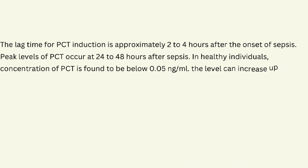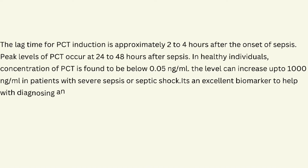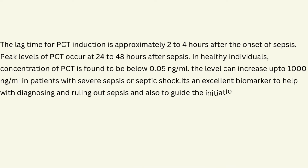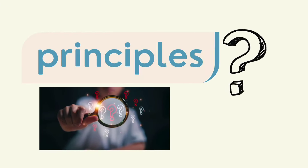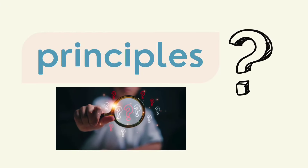In healthy individuals, concentration of PCT is found to be below 0.5 ng/mL. The level can increase up to 1,000 ng/mL in patients with severe sepsis or septic shock. It's an excellent biomarker to help with diagnosing and ruling out sepsis, and also to guide the initiation and cessation of antibiotics.